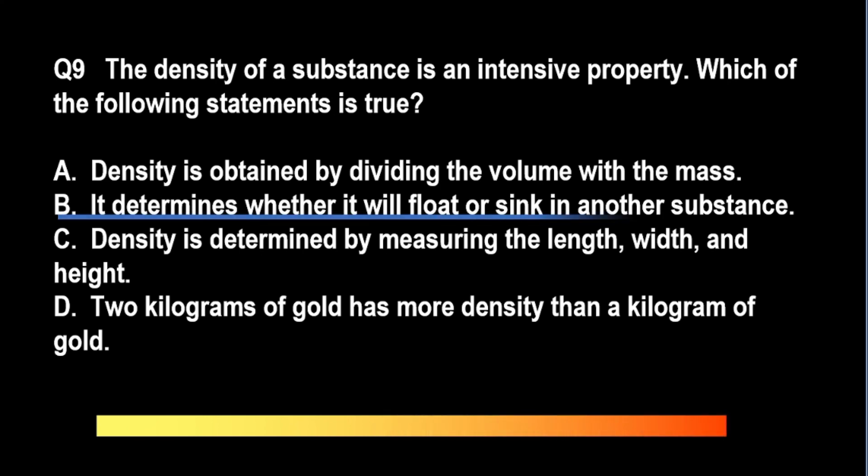The correct answer is letter B. The reason why oil floats on water is that oil is less dense than water. A is incorrect because density is computed by dividing the mass with the volume and not the other way around, that is, volume divided with the mass. D is also incorrect because two kilograms of gold has the same density as a kilogram of gold.